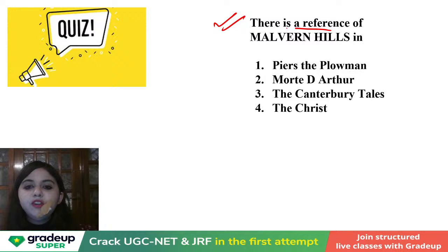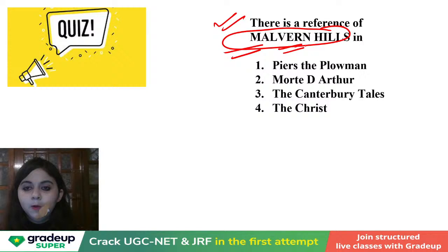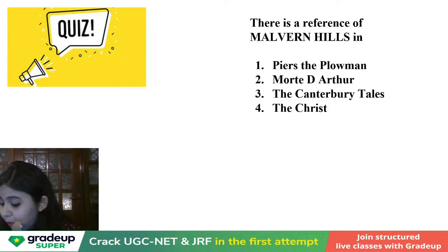Here comes your first question for the quiz. There is a reference to Malvern Hills — these are hills in the UK, similar to how we've got Shimla as a hill spot in India. You need to tell me which work has a reference to Malvern Hills. This is a beautiful question for SET exams — multiple times you will see this question come in.